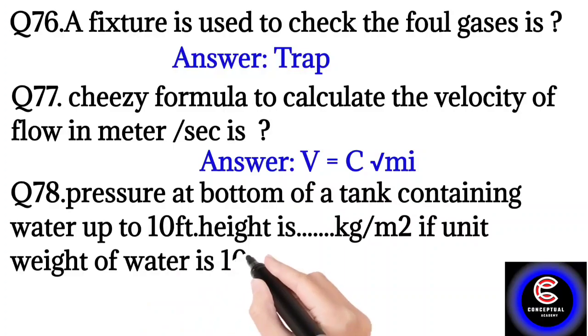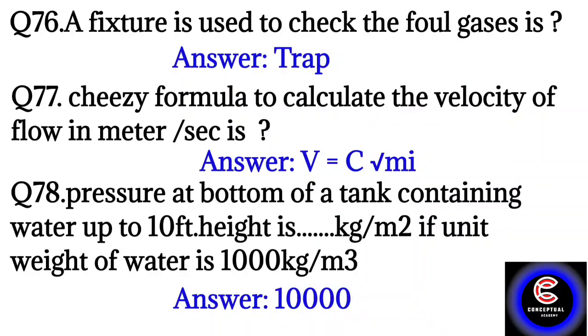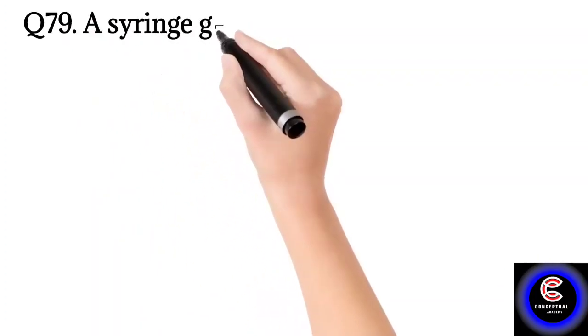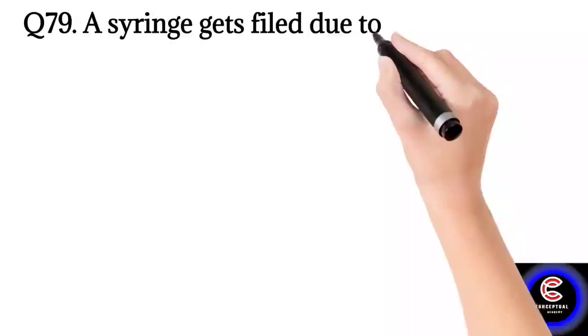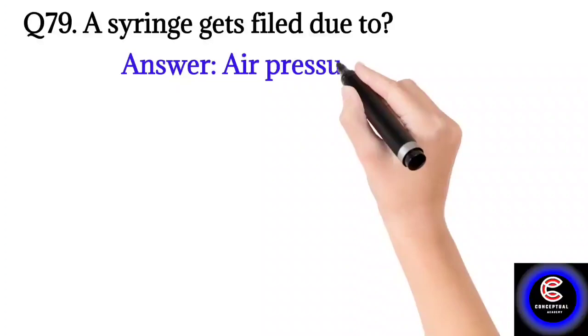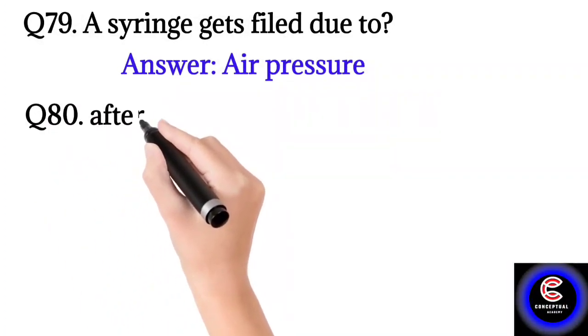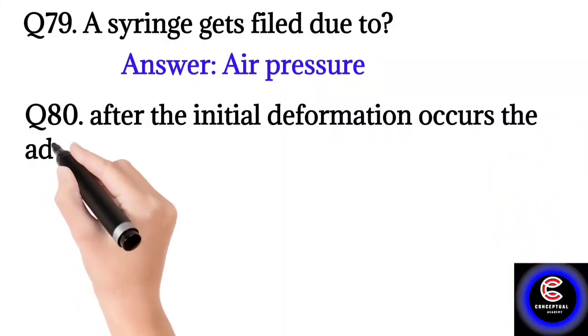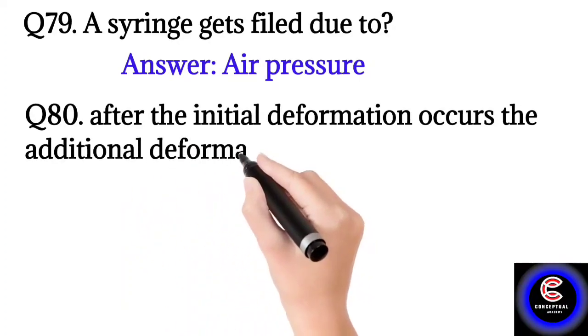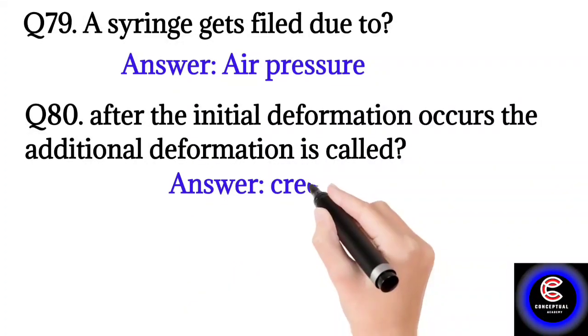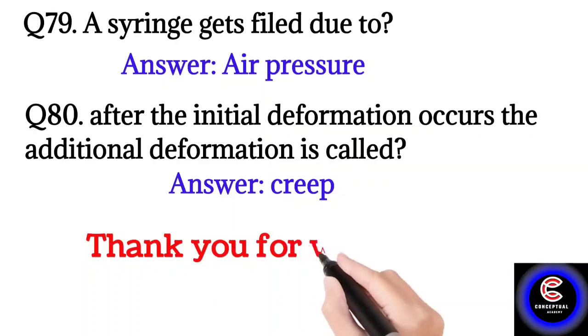Question number 79: A syringe gets filled due to? So the answer is air pressure. Question number 80: After the initial deformations of course, the additional deformations is called? So the answer is creep. So thank you for watching.